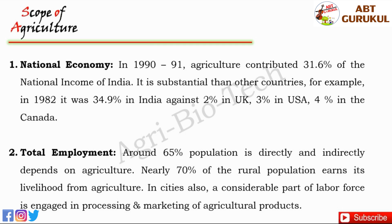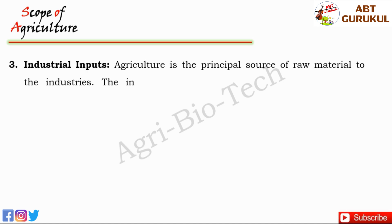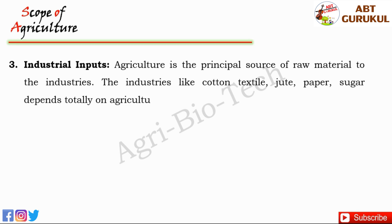Agriculture also has scope in industrial inputs. Most of the industries depend on the raw material produced by agriculture, making agriculture the principal source of raw material to industries. Industries like cotton textile, jute, paper, and sugar depend totally on agriculture for the supply of raw material.